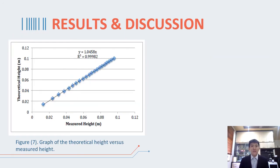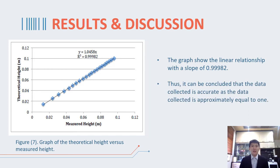Figure 6 shows the derived equation that will be used for the remaining calculations. Figure 7 shows the data of theoretical height versus measured height of water for a given mass. It can be seen as a linear relationship with a slope of 0.99982 which is approximately equal to one. Thus, it can be concluded that the data collected is accurate.